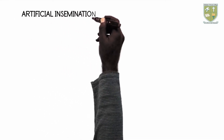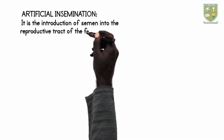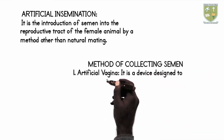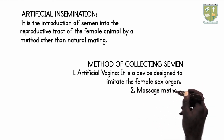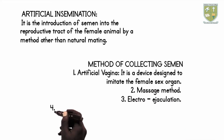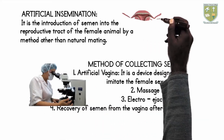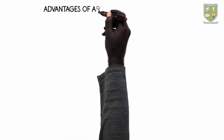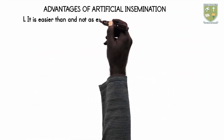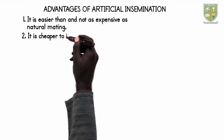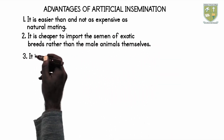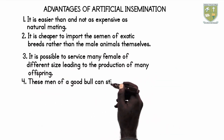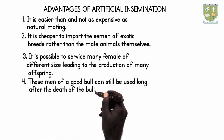Artificial Insemination: Artificial insemination is the introduction of semen into the reproductive tract of the female animal by a method other than natural mating. Methods of Collecting Semen: 1. Artificial Vagina — it is a device designed to imitate the female sex organ. 2. Massage Method. 3. Electro-ejaculation. 4. Recovery of semen from the vagina after service. Advantages of Artificial Insemination: 1. Artificial insemination is easier than and not as expensive as natural mating. 2. It is cheaper to import the semen of exotic breeds rather than the male animals themselves. 3. It is possible to service many females of different sizes, leading to the production of many offspring.